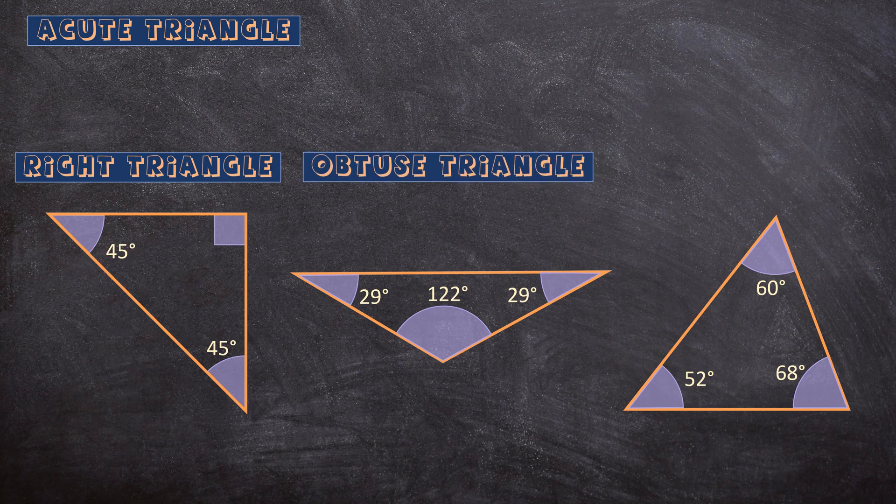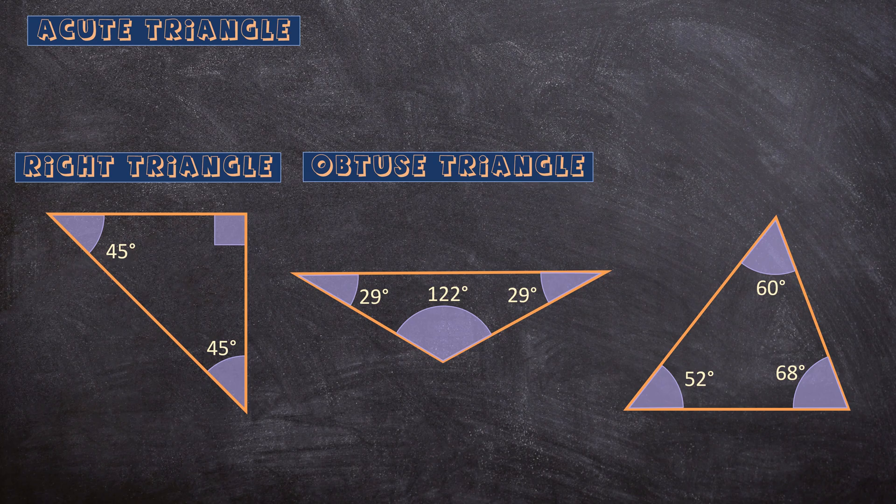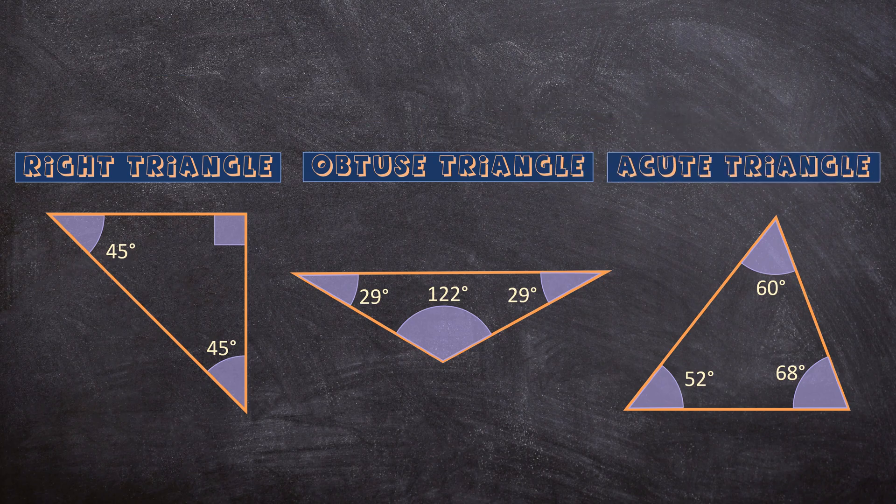But how about this triangle on the right? This triangle only has angles smaller than 90 degrees, so this is an acute triangle.